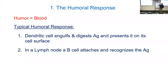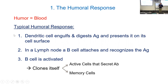You can see step one is a dendritic cell grabbing on to the antigen — something recognized as foreign to the body. The B cell recognizes the antigen and gets activated. When it gets activated, it clones itself: the cell undergoes mitosis and now there are a whole bunch of duplicate copies. Some become active cells that create antibodies, and some become long-lived memory cells.